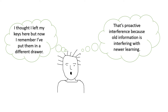Proactive interference is when old information interferes with newer learning. For example, you might have moved your keys to a different drawer, but you go back to the old drawer to find your keys. The old information is interfering with the newer information in this instance.